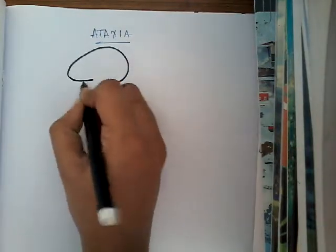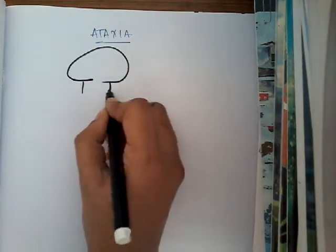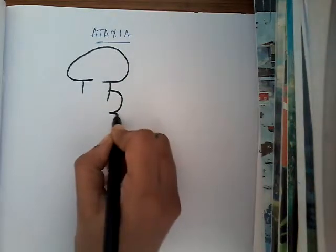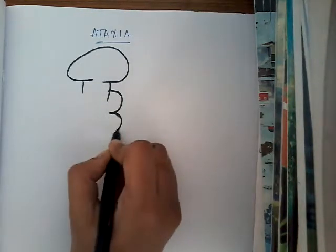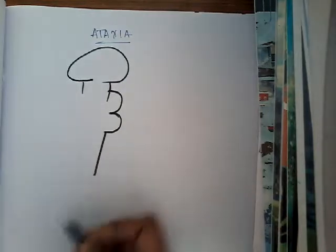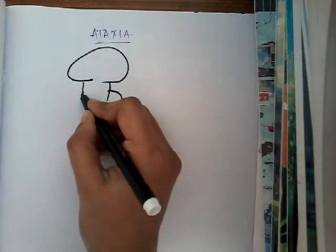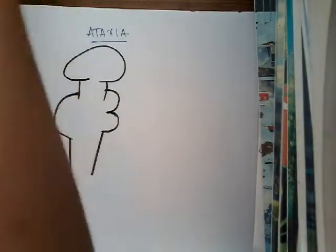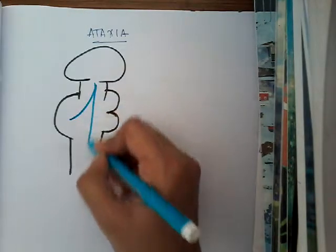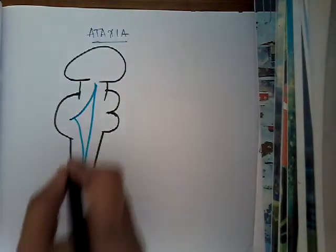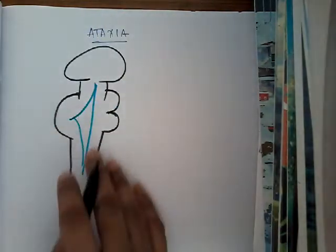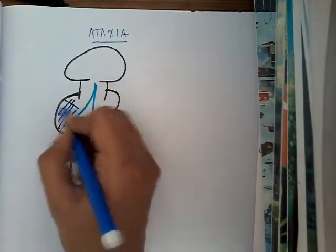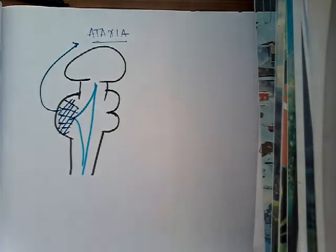So this is the brain, this is the brain stem. This is the medulla, pons, medulla and then spinal cord. Posteriorly we have Cerebellum. And this is the ventricle. So whenever there is some disorder in the Cerebellum, that causes Ataxia. So this is the main area for problem resulting in Ataxia.